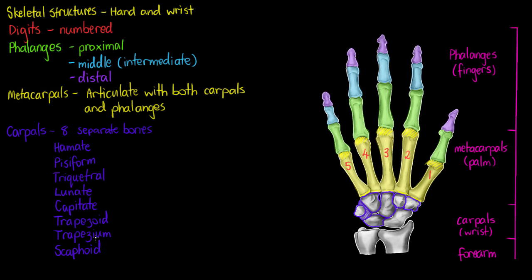Our last carpal bone being the scaphoid. Now the scaphoid is actually quite large. We can see it on the bottom here closest to our radius, so it's going to articulate with the radius. Those are all of our carpals.